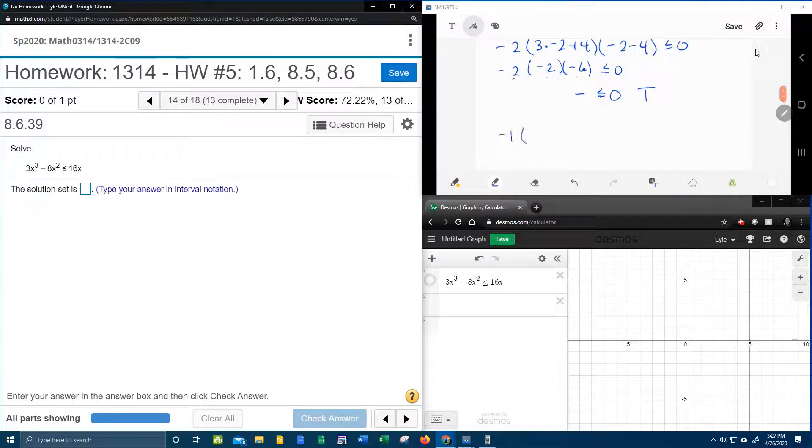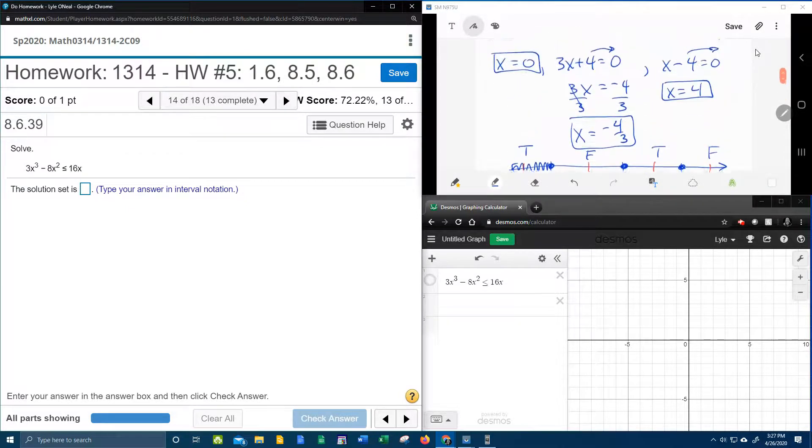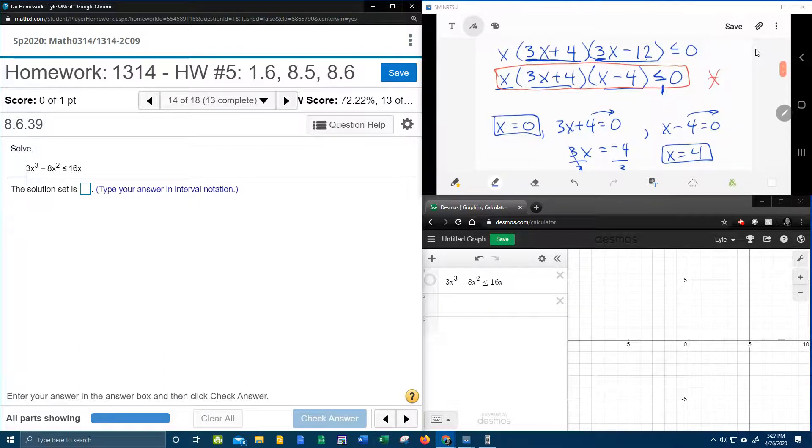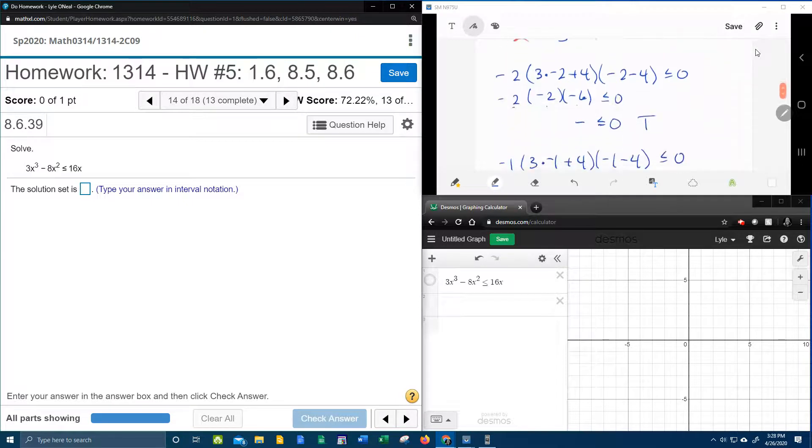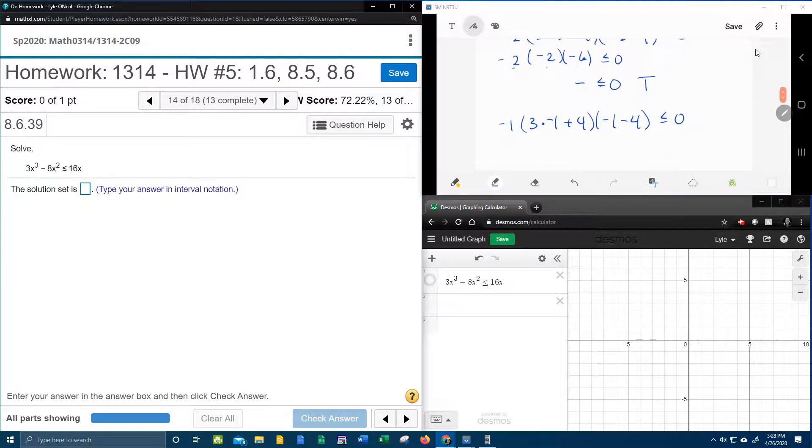Negative 1, 3 times negative 1 plus 4. Negative 1 minus 4, less than or equal to 0. Remember what I'm doing is I'm plugging back into this right here, this factored form. Every x gets replaced with negative 1, and then I'm going to see if that's true or false.